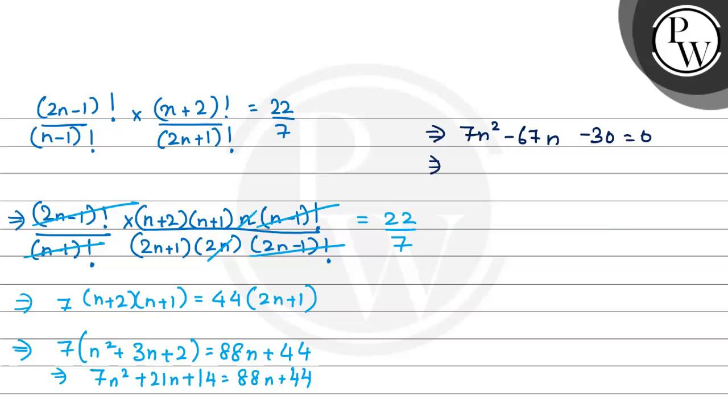Now, make factors of this. My factors are gonna be 30 and 7, 21, 10. My factors are 21, 10. So 7n square minus 70n plus 3n minus 30 is equal to 0.